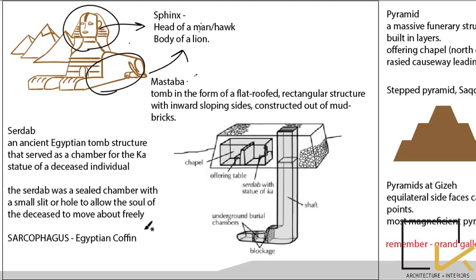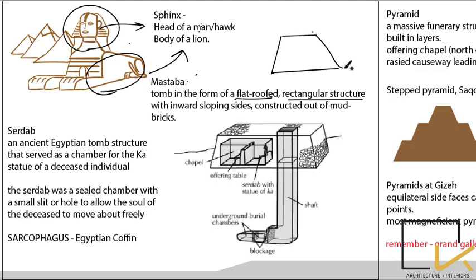Mastaba is a flat-roofed rectangular structure with inward sloping sides. In elevation it appears with a flat roof and inward slopes — constructed mainly out of mud bricks. Another term is sardab, which is a chamber with a small hole.